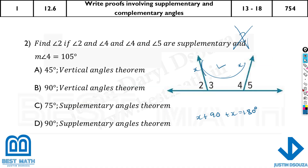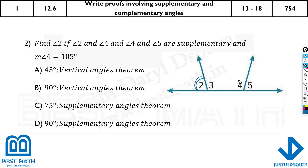What about this one? Here they have told us to find angle 2. Angle 2 and angle 4 — you can see angle 2 and 4 are supplementary. Angle 4 is 105 degrees. This is 105, and this is supplementary, so we need to find angle 2. When we add these two — angle 2 plus angle 4 — what must be the total angle? 180. Why? Because it's the supplementary angle theorem.